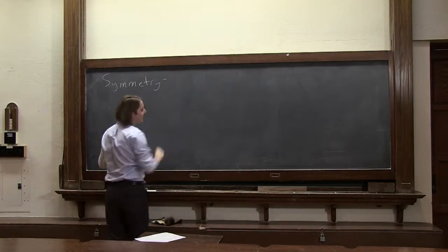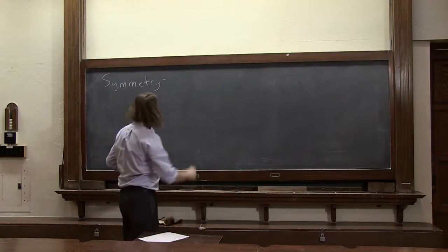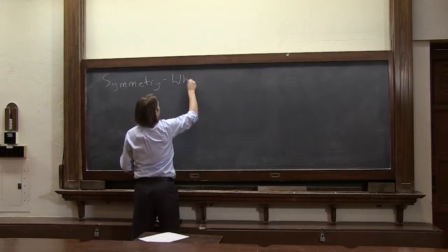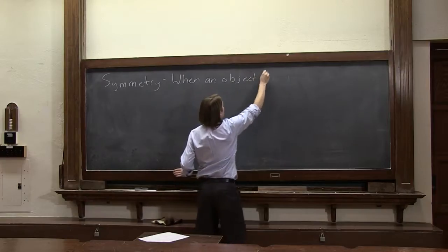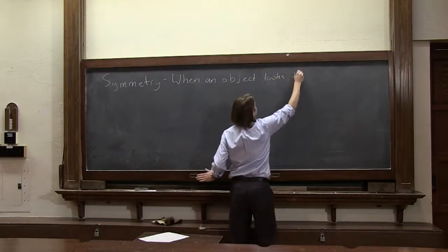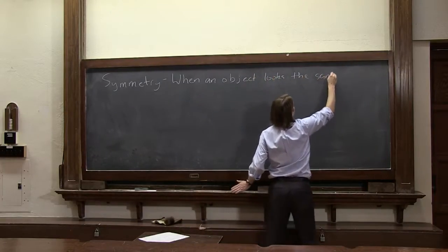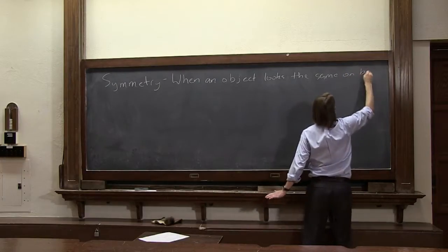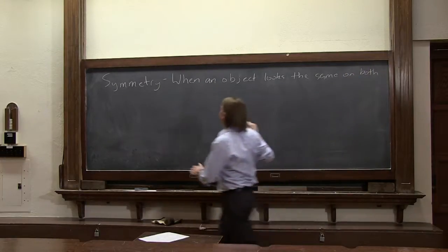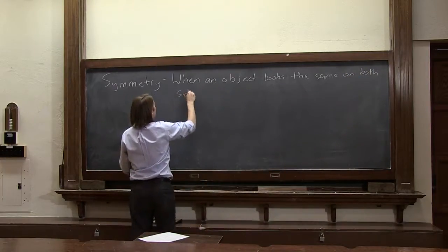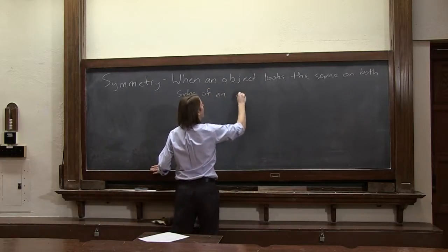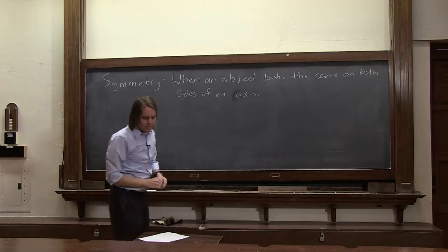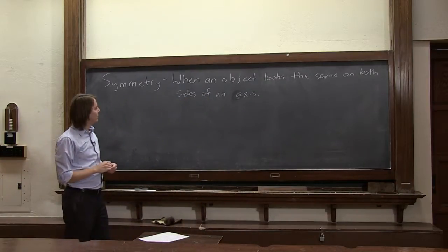So let's start with a good, simple definition of symmetry: when an object looks the same on both sides of an axis. When an object looks the same on both sides of an axis. So let's think about our charged rod problem that we just did.